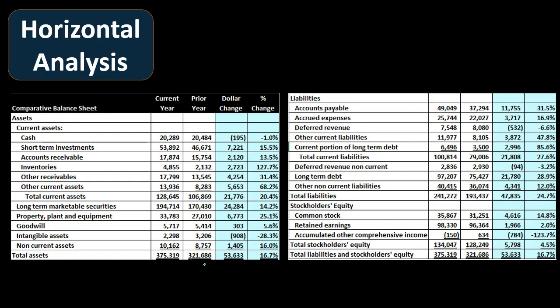Here's an example of horizontal analysis. We'll typically have the current year, the prior year, and then the change from the current year to the prior year. Then we take the percentage change — this is where ratios and percentages help us do comparisons that aren't as easy when looking at just dollar amounts. For example, we might set a standard such as flagging everything over a 15% difference as a general rule, comparing one year to the prior year — the same company period to period.